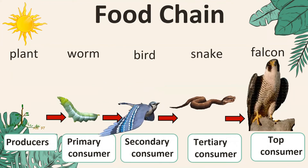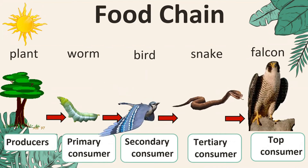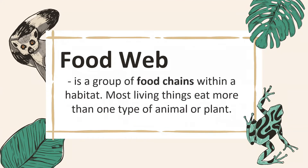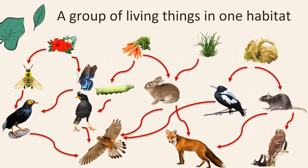In nature, food chains are big and have many parts. One producer is food for many kinds of consumers. A big and mixed food chain with interrelated plants and animals from a habitat is called a food web. A food web is a group of food chains within a habitat — most living things eat more than one type of animal or plant.